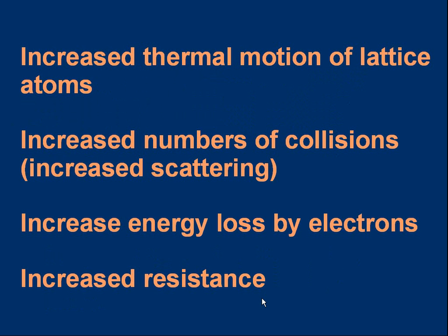We can summarize the stages involved. Increased thermal motion of lattice atoms, if the metal gets hotter, leads to increased number of collisions or increased scattering of the conduction electrons. That means there's an increased energy loss, energy transfer from electrons to the atoms. That means increased resistance. If we wanted to keep the electrons moving as fast, we'd have to supply more energy, a higher voltage to compensate. So, as the temperature gets bigger, the resistance gets bigger.